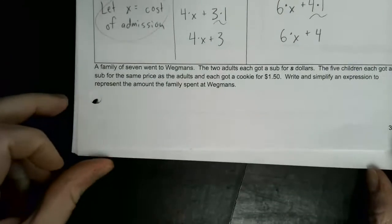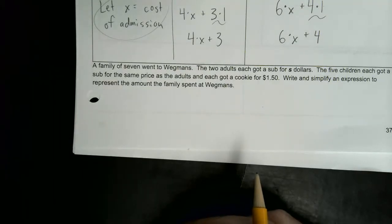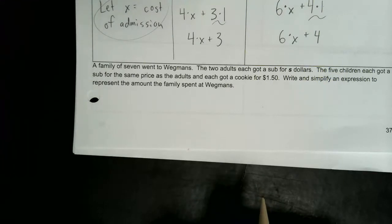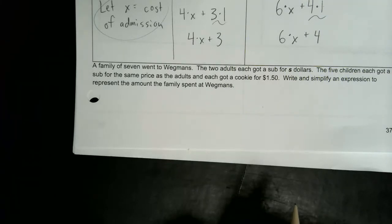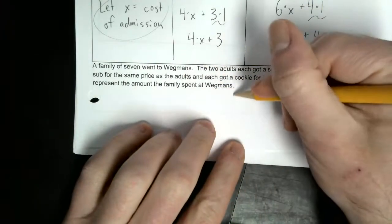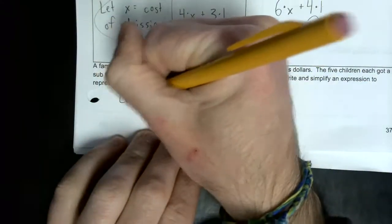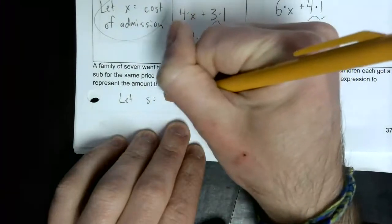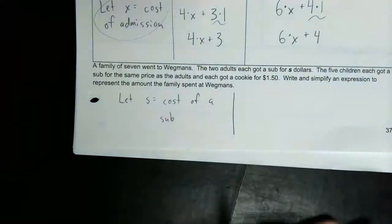A family of seven went to Wegmans. The two adults each got a sub for S dollars. The five children got a sub for the same price as the adults, and each got a cookie for $1.50. Write and simplify an expression to represent the amount the family spent at Wegmans. The unknown we need is S — they give us S as the cost of a sub.